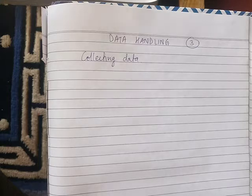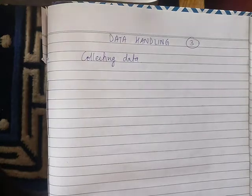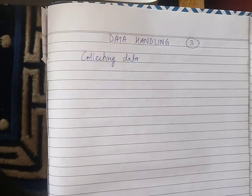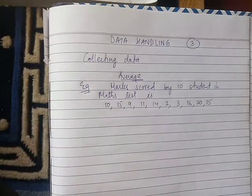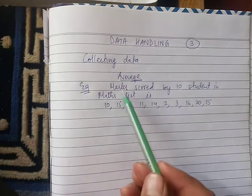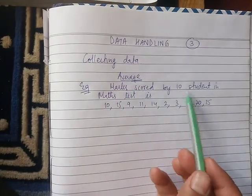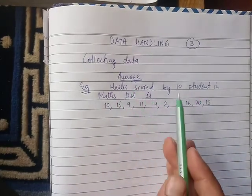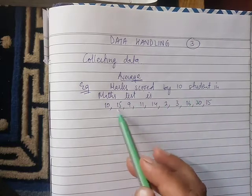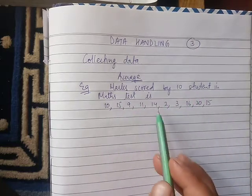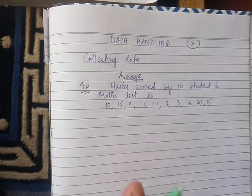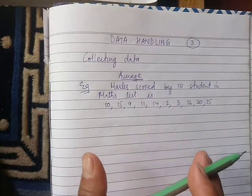This is a value. For example, the math score of 10 students is: 10, 15, 9, 11, 14, 2, 3, 16, 20, and 15.